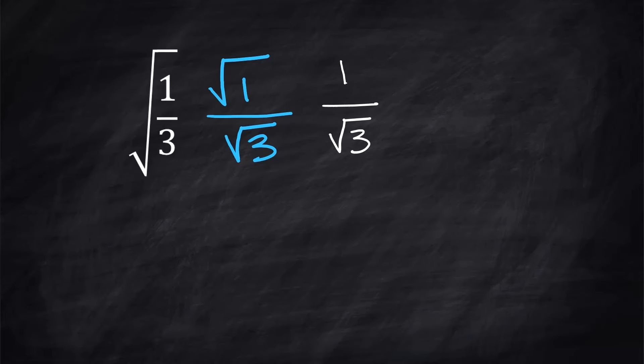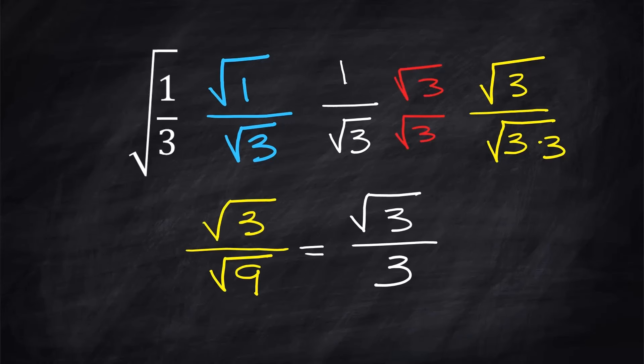To rationalize, you take the top and the bottom times that radical, so the square root of 3 times 1 is the square root of 3, and the square root of 3 times the square root of 3 is the square root of 3 times 3. Well, the square root of 3 times 3 is the square root of 9. When you simplify this, the square root of 3 over 3, that thing is rationalized.